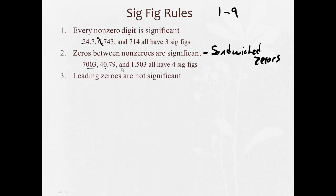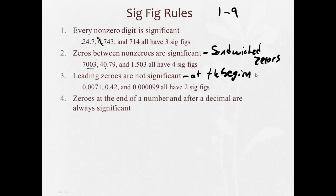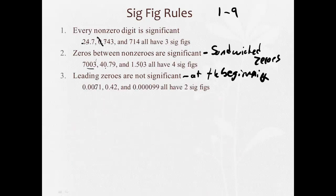Rule three: leading zeros are not significant. 'Leading' means zeros at the beginning of a number. So in numbers like 0.0045 or 0.00023, all of those leading zeros are not significant — only the non-zero digits count. Each of these examples has just two significant figures.